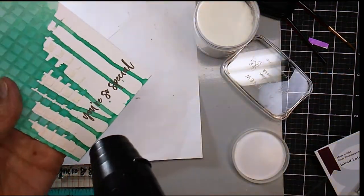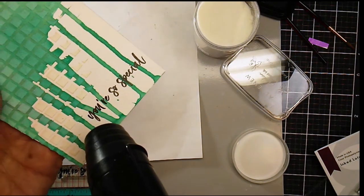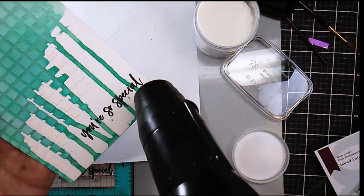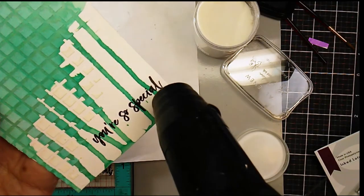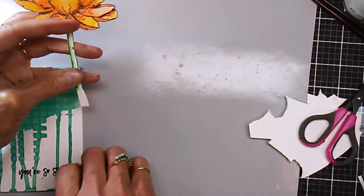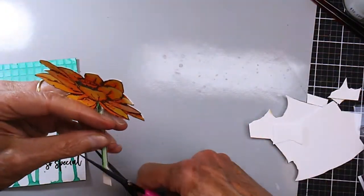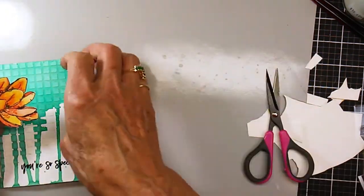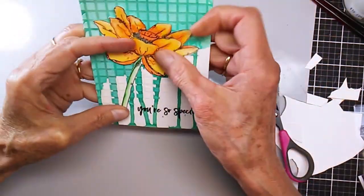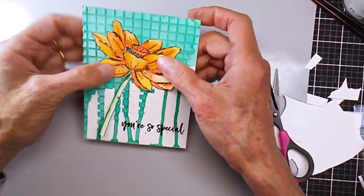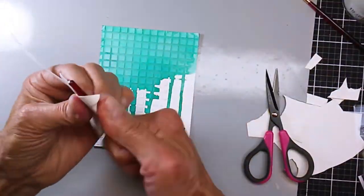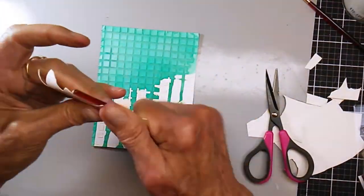I'm just applying clear embossing powder and heating it up. Then I fussy cut out the lotus flower there and I'm trying to decide exactly where I want to put it on the card. I kind of curled the edges up to give it a little bit of dimension.